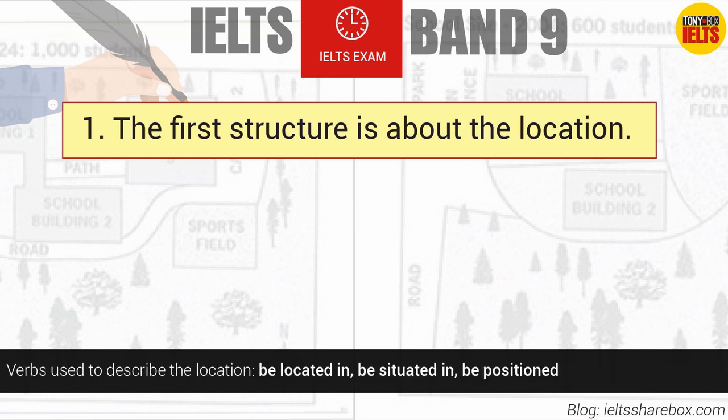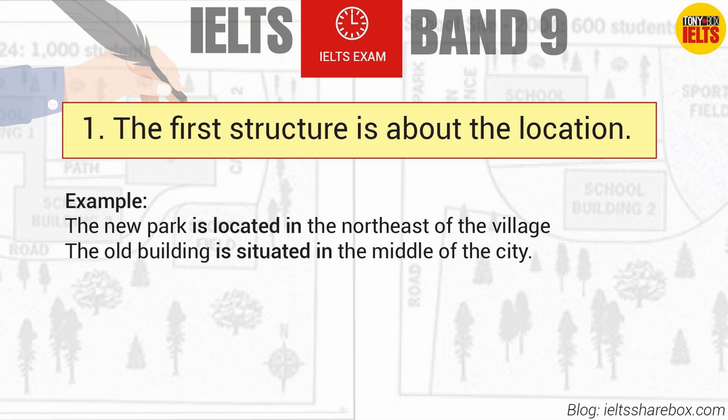Verbs used to describe location include: be located in, be situated in, and be positioned. For example: 'The new park is located in the northeast of the village.' 'The old building is situated in the middle of the city.'